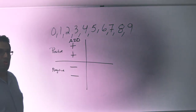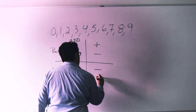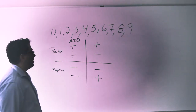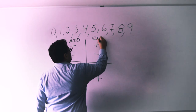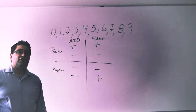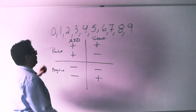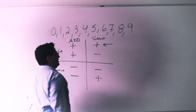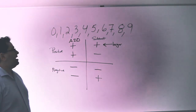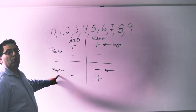Our other combinations are if we have a positive number and a negative number, or a negative number and a positive number. When you see that you have a positive and a negative number, we're going to subtract. When you're done subtracting, you're going to look for the number that is larger. If the larger number was positive, then your answer will be positive. If the larger number was negative, then you will have a negative answer.